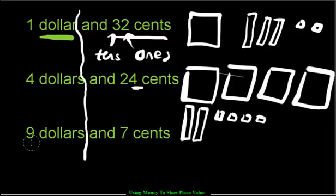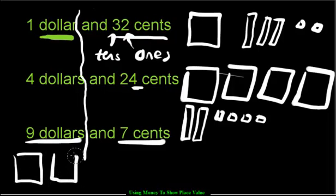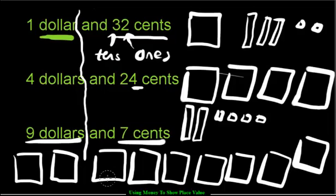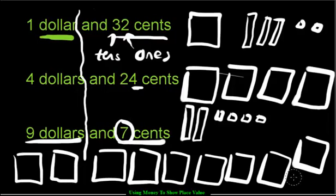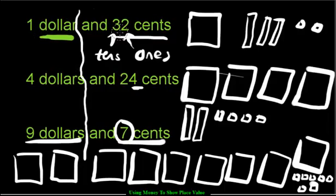$9.07. We have $9, so we need nine hundreds — one, two, three, four, five, six, seven, eight, nine. What else do we need? We need seven cents. Don't make these long skinny ones — don't make tens, because we don't have any tens. It's just one number. We have seven pennies, so I'm going to squeeze it in the corner — one, two, three, four, five, six, seven. When you have dollars and cents together, split it down the middle. Do the dollars separately and do the cents separately.